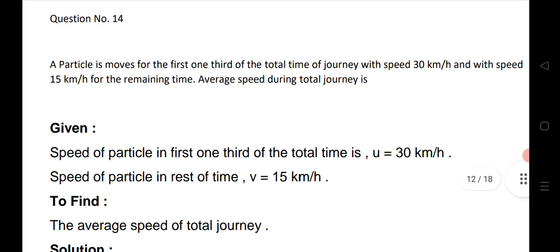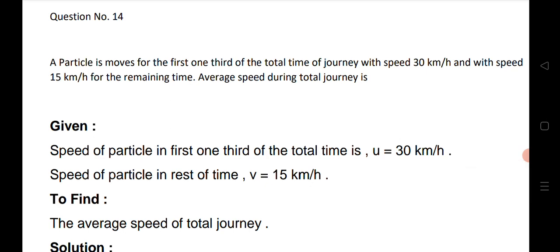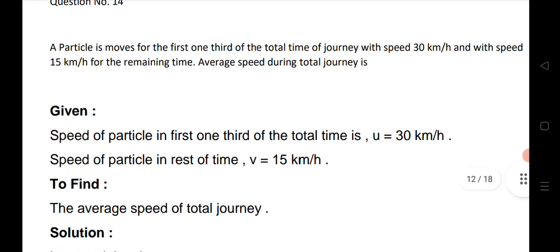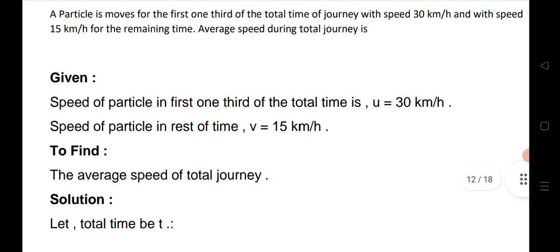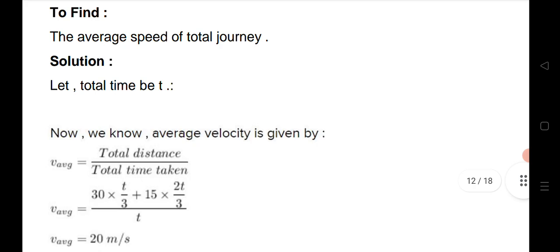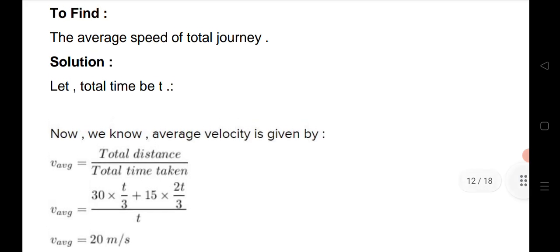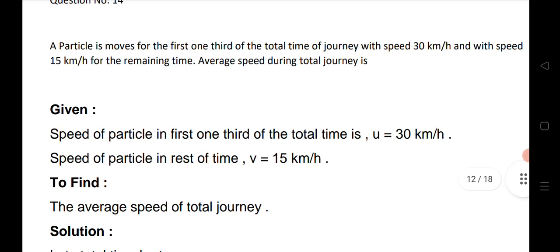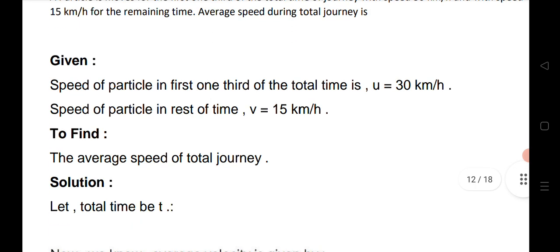Question 14: a particle moves for the first one-third of the total journey time at 30 km/h and for the remaining two-thirds of the time at 15 km/h. Find the average speed of the journey. Using the formula total distance divided by total time: first distance equals 30 × (t/3), second distance equals 15 × (2t/3). Adding them and dividing by total time t gives the average speed of 20 km/h.